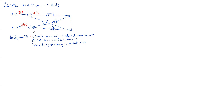Now to do step two: we're going to write the equations around each summer. We've got two summers, so we're going to have two equations. The first equation around the top summer: the output W(z) equals the input X(z) plus the feedback terms. This is z⁻¹ times W(z), multiplied by two gives 2z⁻¹·W(z), and multiplied by one half gives (1/2)z⁻¹·W(z).